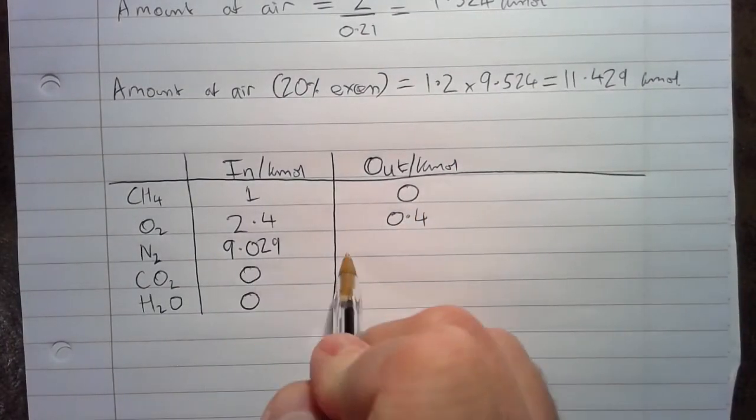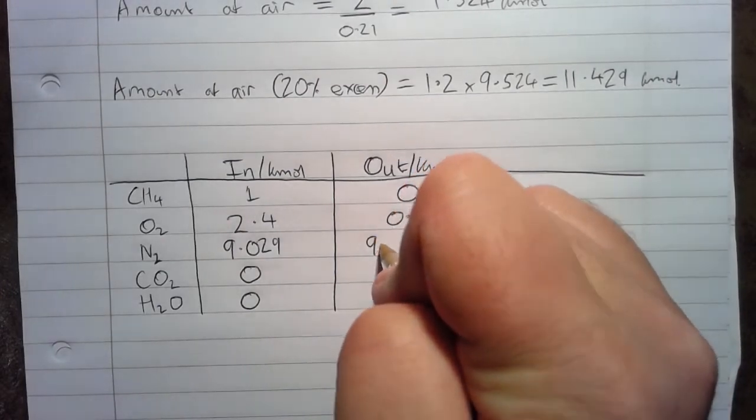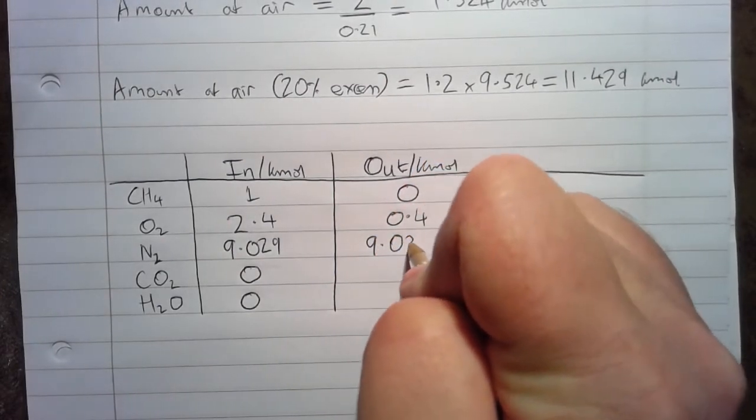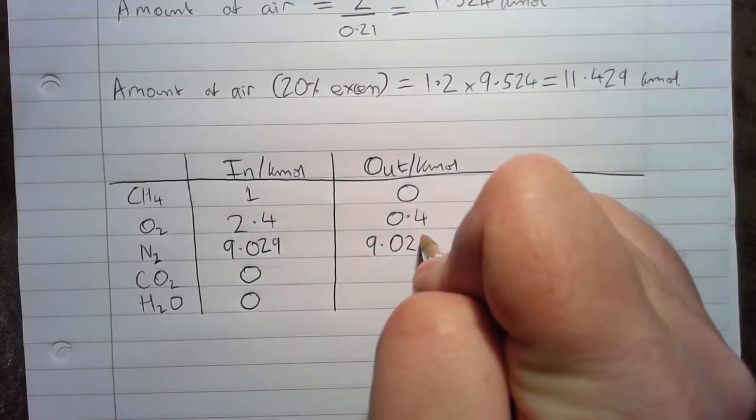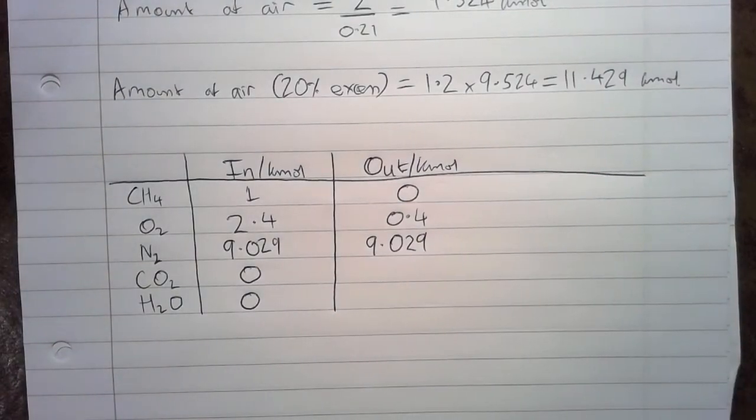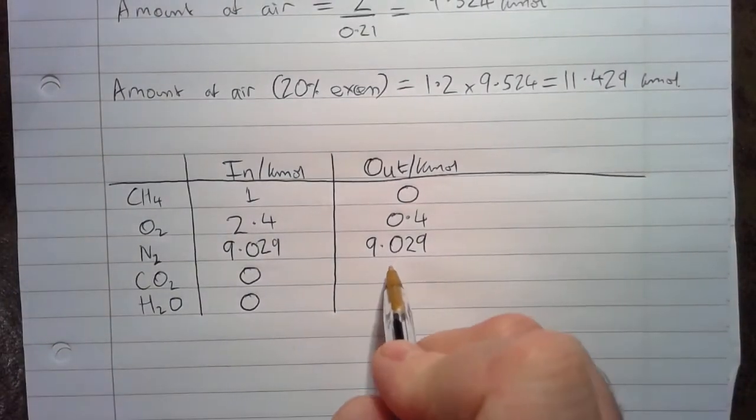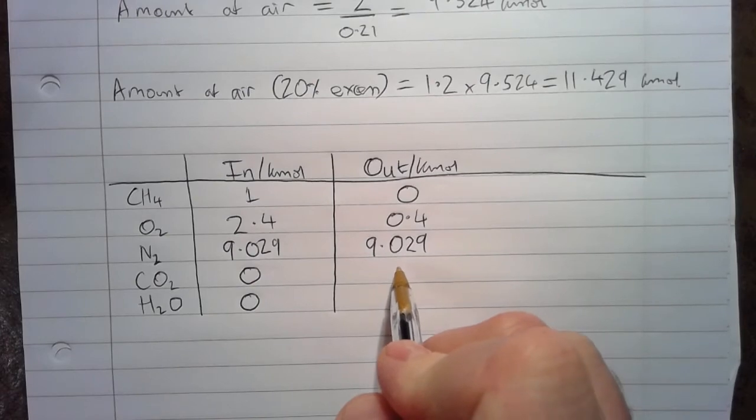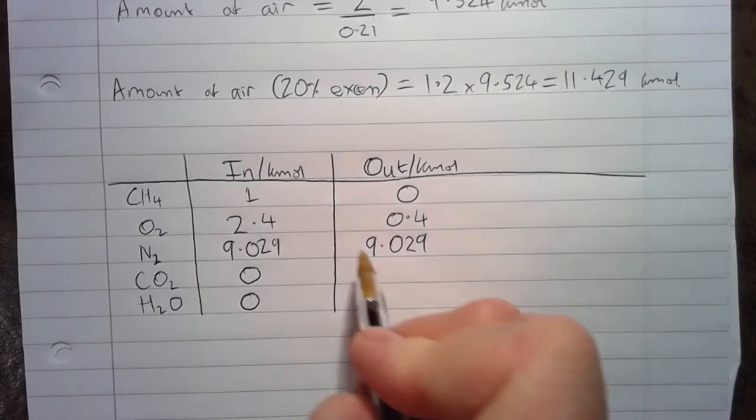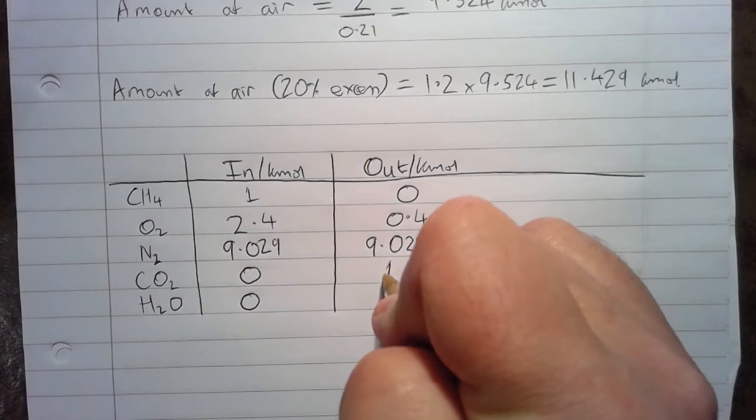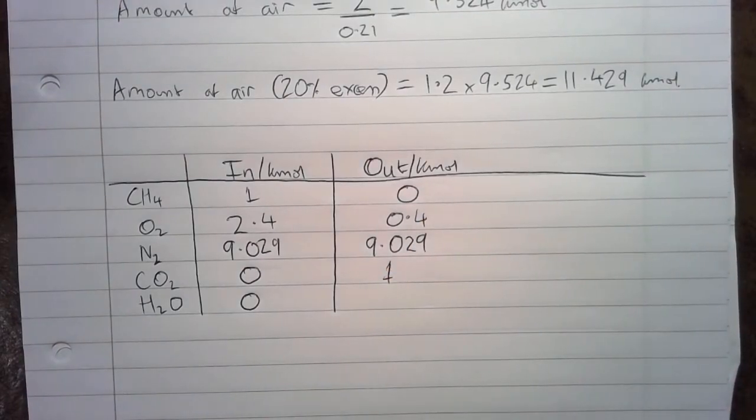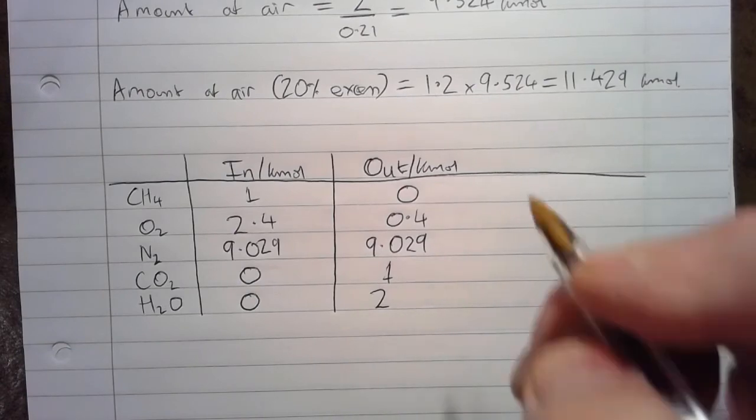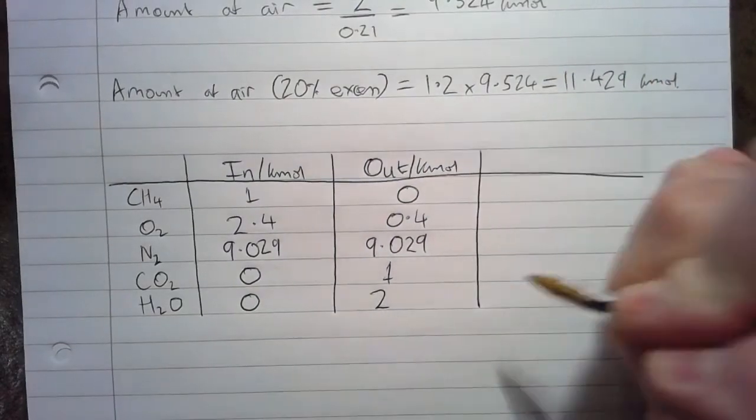The nitrogen is considered to be inert, so that is just 9.029 kmoles coming out. Again, back to the combustion equation, we know from the stoichiometry that for 1 kmole of methane, we'll produce 1 kmole of CO2 and 2 kmoles of H2O. That's just based on the stoichiometry of the chemical equation.